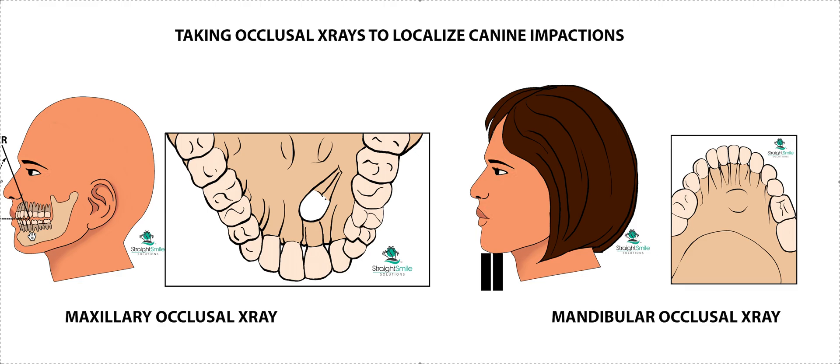Usually in terms of impacted canines, labial ones are easier than lingual ones, at least on the top or buccal ones. It can make a difference — especially if I screen early and see this at age six, seven, or eight. For those of you getting started in ortho, you're probably going to want to refer out anything that's obviously palatal, because it's going to be a lot harder initially. All right, thanks so much.